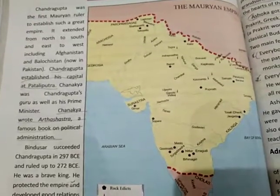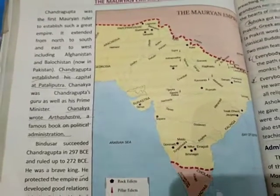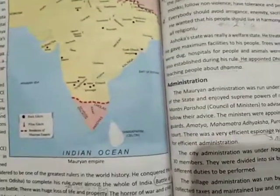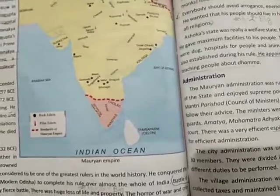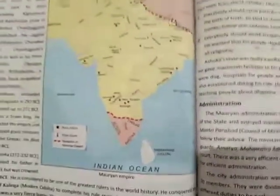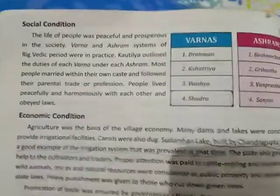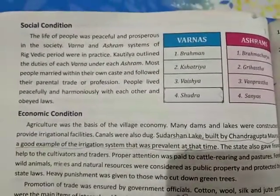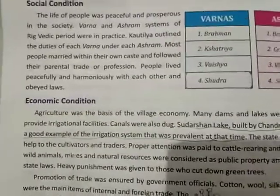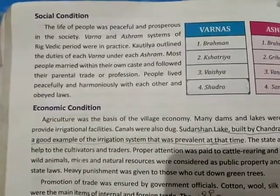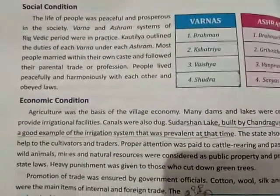Good morning students. We are studying chapter 13, The Mauryan Dynasty, from your history portion. In the previous video we studied about Chandragupta, Bindusara, Ashoka, and the administration of the Mauryan Dynasty. Today we are going to start from social conditions — what kind of social conditions existed at the time of the Mauryan Dynasty, and what practices were going on in society.